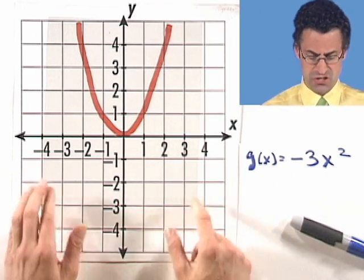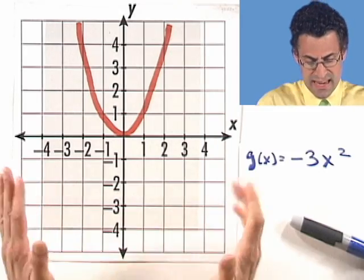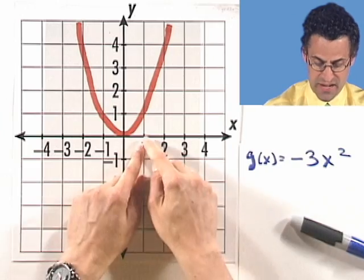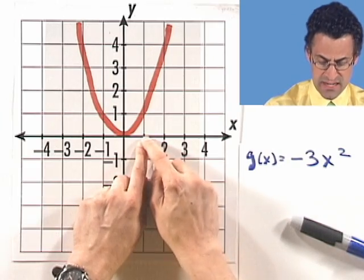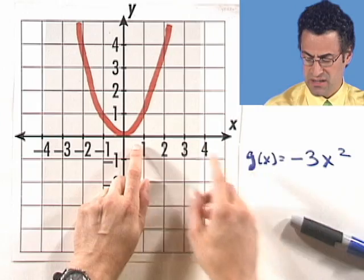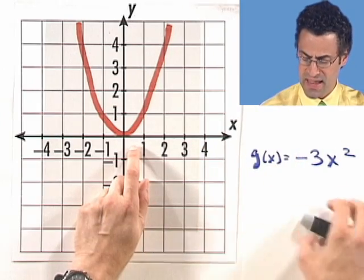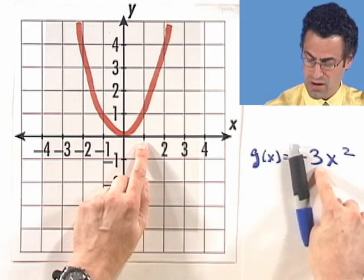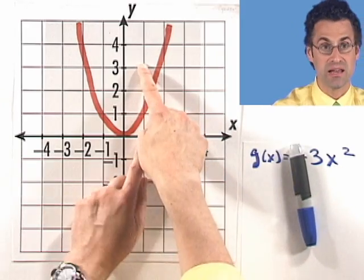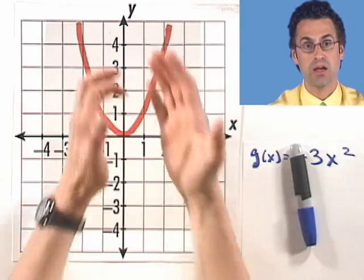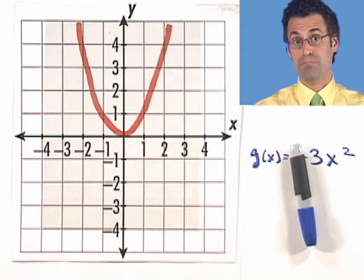What does that do in terms of the picture? It tightens the wings of the parabola. Think about it — on a standard parabola at x equals 1, we're at 1. Now, disregarding the negative sign for a second, at x equals 1 we're going to be at 1 times 3, way up here at 3. When you multiply by a big number, it sharpens the thing, it makes it tighter.